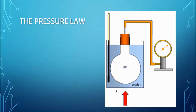Here we have a depiction using a round-bottom flask. When we apply heat to the gas, that application of heat causes the pressure to increase. This ties in with the kinetic theory — all particles are in constant random motion, hitting the sides of the flask and causing pressure. When we apply heat, the particles move faster, increasing the rate of collision on the surface and thus increasing the pressure.